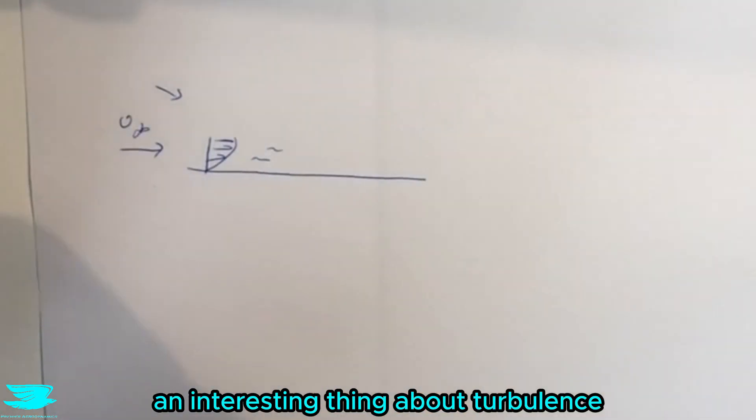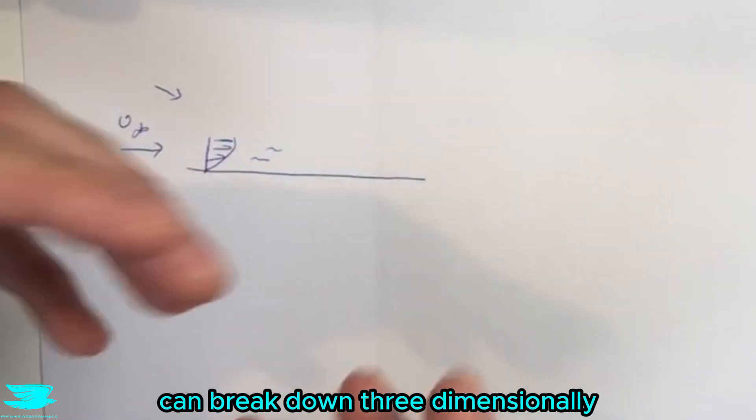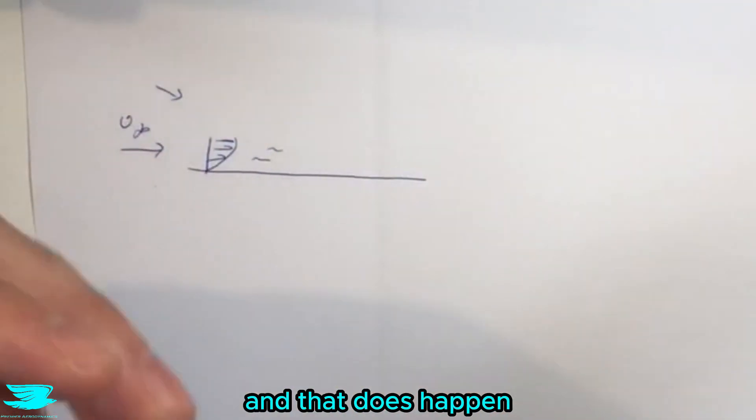And the interesting thing about turbulence is that even two-dimensional turbulence can break down three-dimensionally and that does happen and that's why we do get a transition.